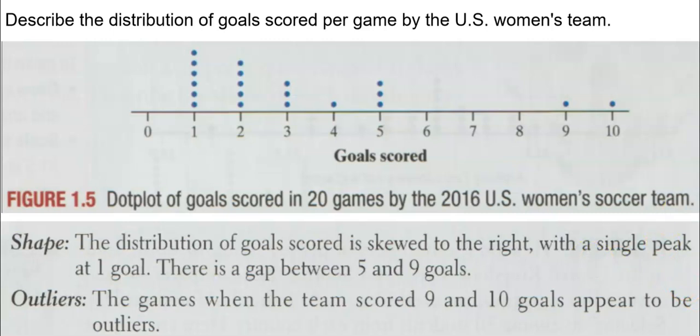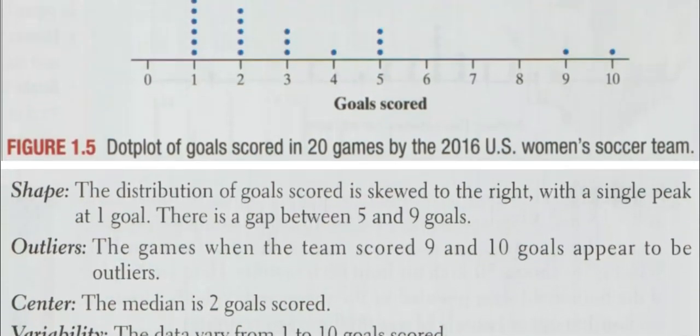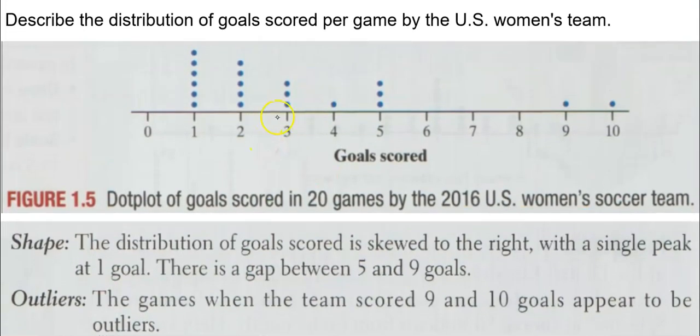So let's describe the distribution of goals scored by the U.S. women's soccer team. We want to do SOCS—shape, outliers, center, and variability. So I look at this and what I notice is we have more goals on the left, fewer goals on the right. So the shape says it's skewed to the right. It has a single peak at one goal. There is a gap between five and nine goals.